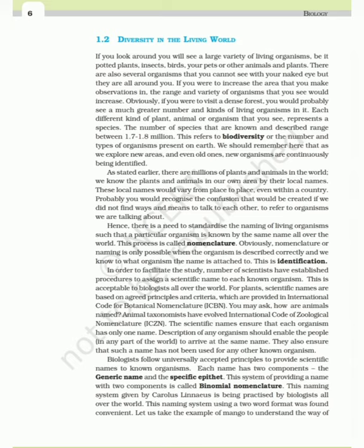There are millions of plants and animals in the world. We know the plants and animals in our own area by their local names, which would vary from place to place, even within a country. Hence, there is a need to standardize the naming of living organisms such that a particular organism is known by the same name all over the world — this process is called nomenclature. Nomenclature is only possible when the organism is described correctly and we know to what organism the name is attached — this is identification.